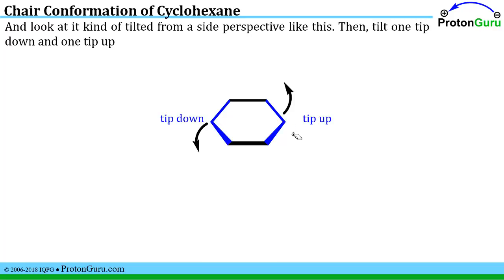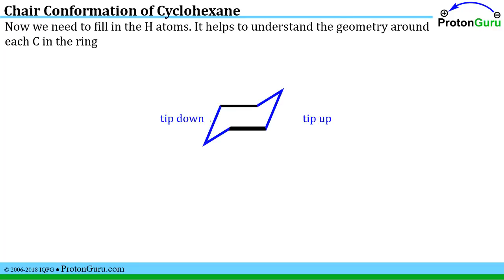And if we think then about tipping one of these sides up and tipping one of these sides down, these pointed parts, we will get something that looks like this. And this looks a lot like what the chair conformation of cyclohexane usually does when people draw it out in textbooks and for exams and things.